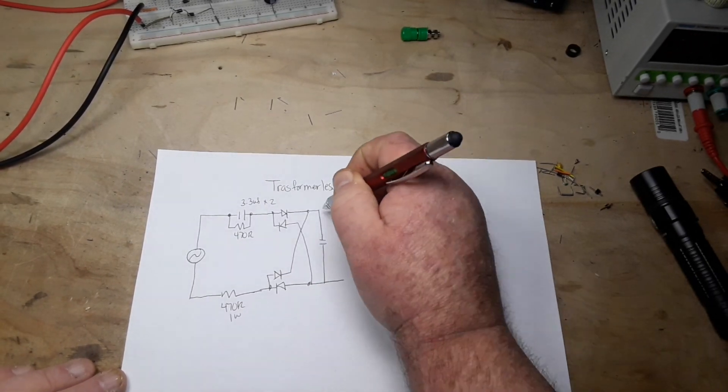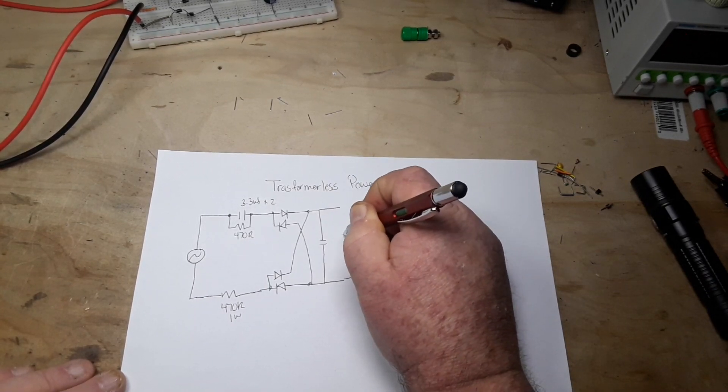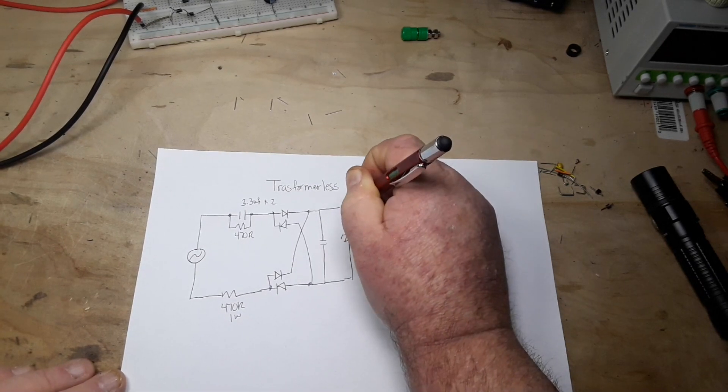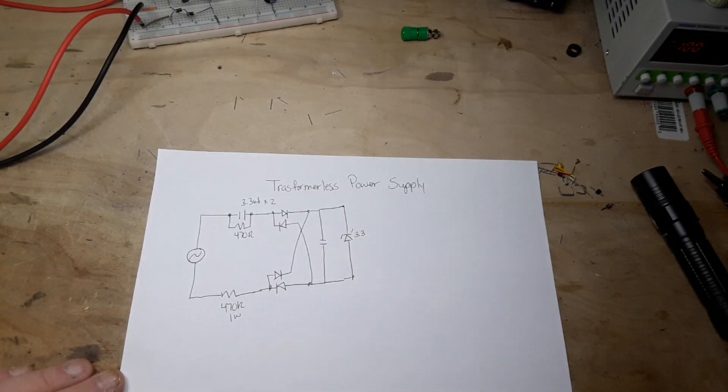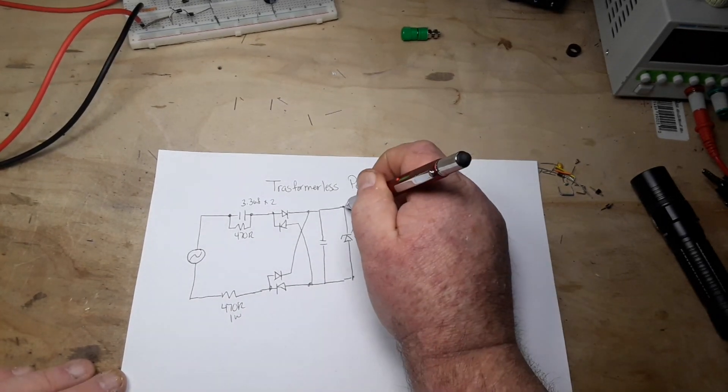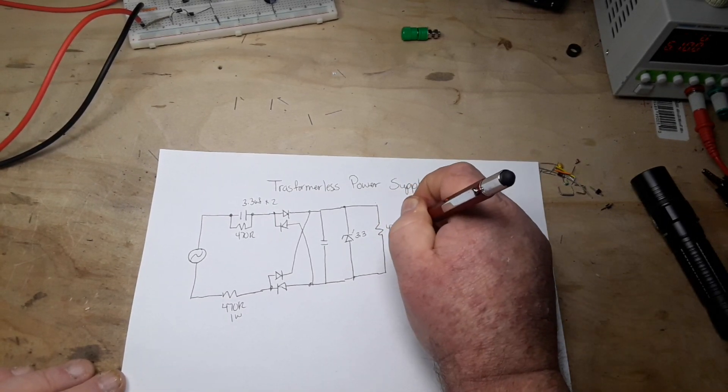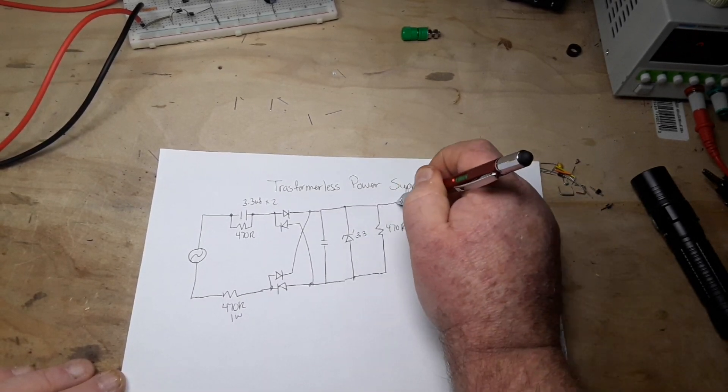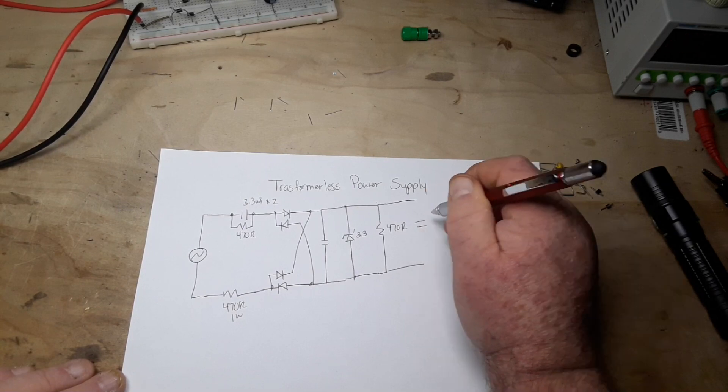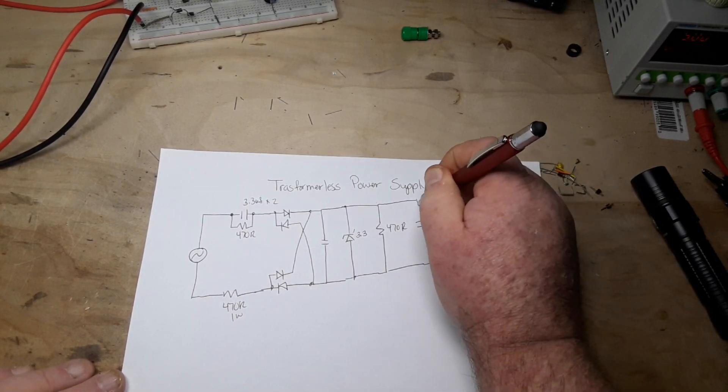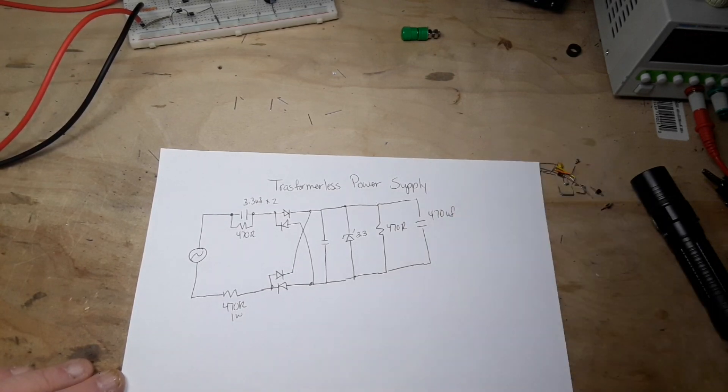After that, we're going to assume this is for a low current usage. We're going to put in a zener diode. In this case, we're going to do 3.3 volts. Put in another 470 ohm, a little bit of a load there, and a reservoir capacitor, say like 470 microfarad or whatever you got on hand for your reservoir. Then your load goes there.